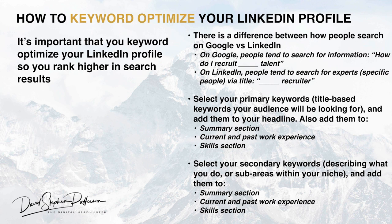Now let's talk about how to keyword optimize your profile so you rank higher in search results. When you think about searching on Google versus LinkedIn: on Google, people tend to search for information — like 'how do I recruit SAP talent?' But on LinkedIn, people tend to search for experts via title — like 'SAP recruiter' or 'finance recruiter.' So you want to select your primary keywords: title-based keywords that your audience is looking for. In my case, 'SAP recruiter' or 'SAP recruitment.' For you it might be 'CFO recruiter,' 'finance recruiter,' 'nursing recruiter,' or 'nursing recruitment.' And you want to add those to your headline, your summary section, your current and past work experience, and your skills section.